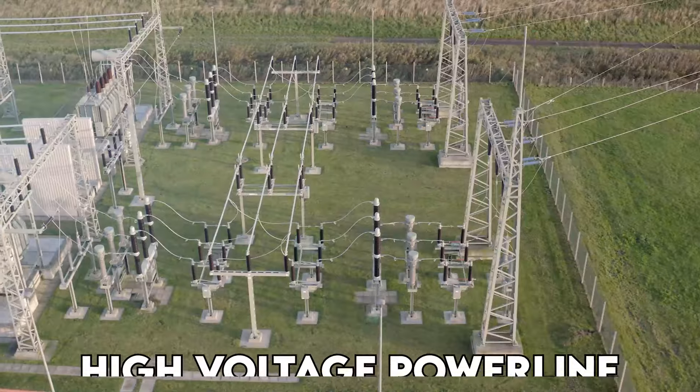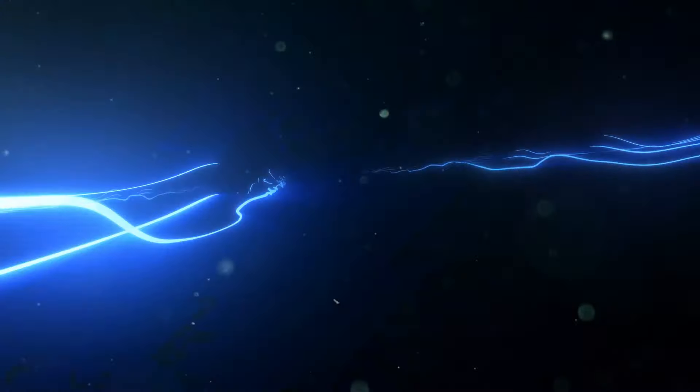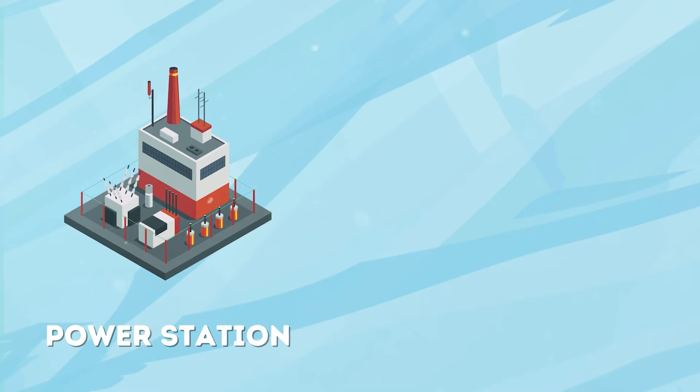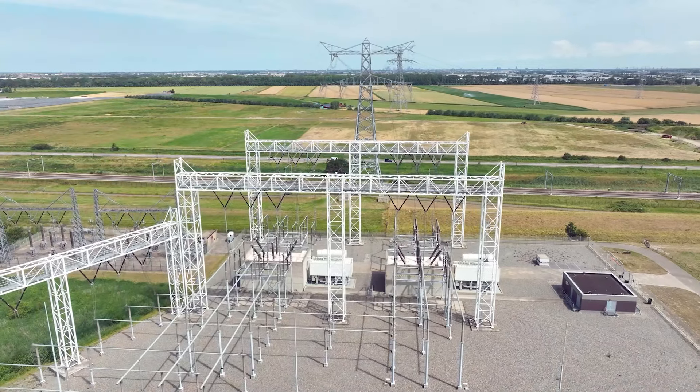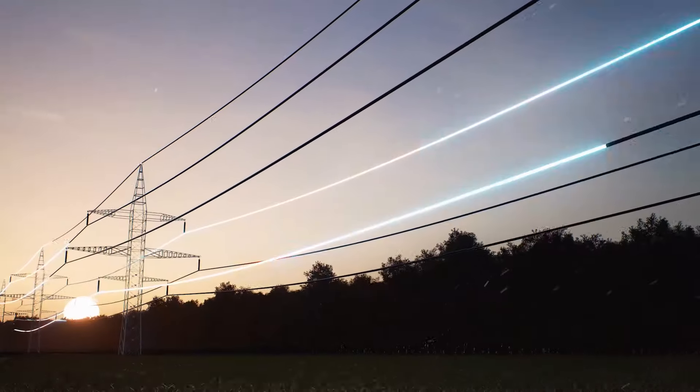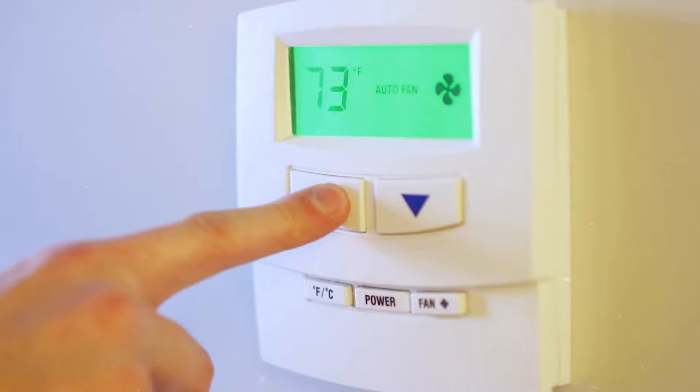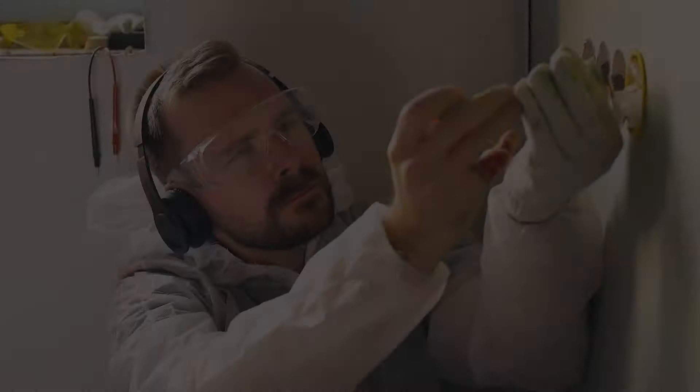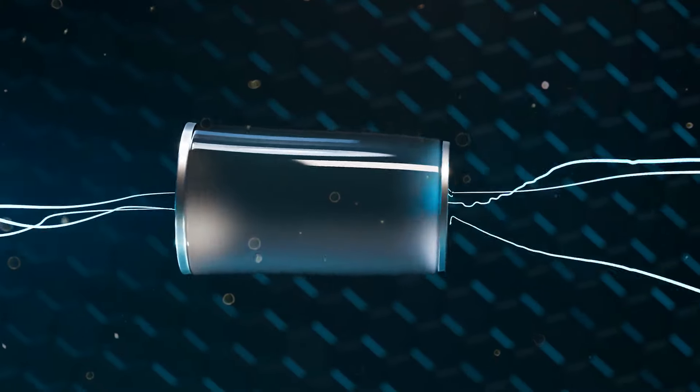Now picture a network of high voltage power lines like super highways carrying this boosted electricity from the power station to substations scattered across the country. At these substations the voltage gets a makeover. Step-down transformers reduce it to a much safer level for your home.